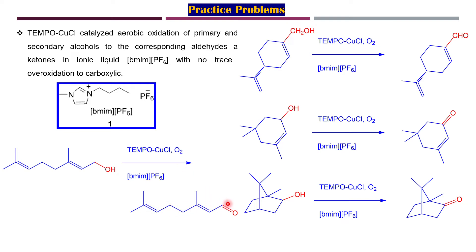Using these conditions, allylic alcohols are oxidized to aldehydes, and secondary allylic alcoholic groups are converted to ketones. The allylic alcohol shown here is converted to the aldehyde, and the secondary alcoholic group is converted to its corresponding ketone product.